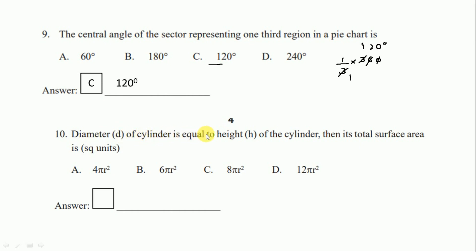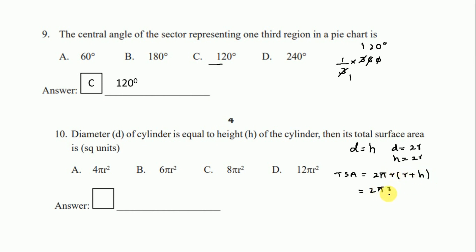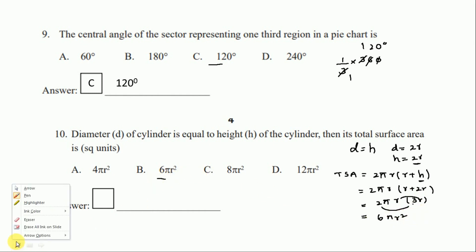Question 10: the diameter d of a cylinder equals the height h. Since d = 2r, height h also equals 2r. The total surface area of a cylinder is 2πr(r + h). Substituting h = 2r gives 2πr(r + 2r) = 2πr × 3r = 6πr². The right answer is option B, 6πr².